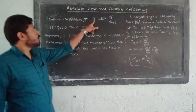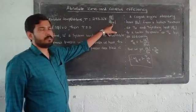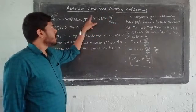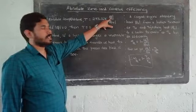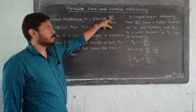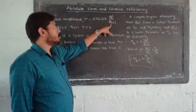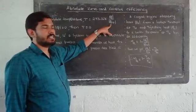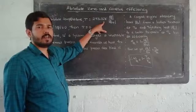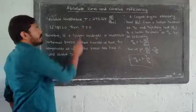T equals Q times 273.16 Kelvin divided by QTG. 273.16 Kelvin is the triple point temperature of water. We will talk about high temperature and low temperature.